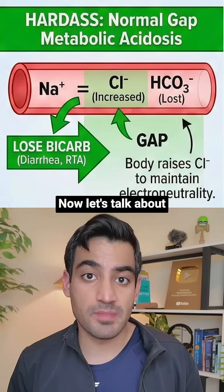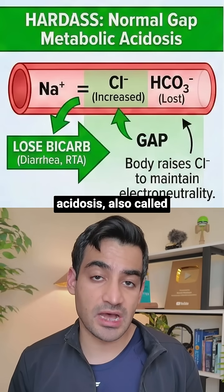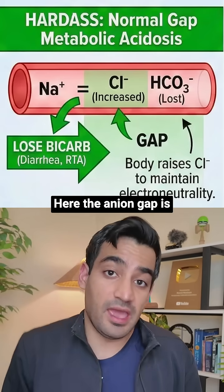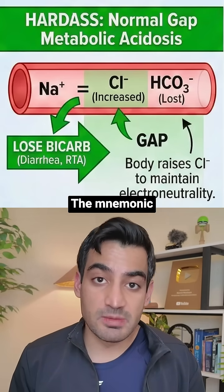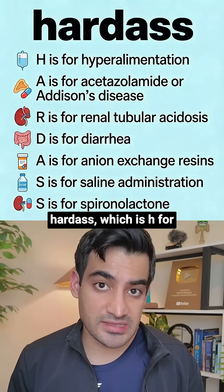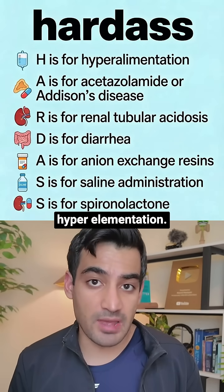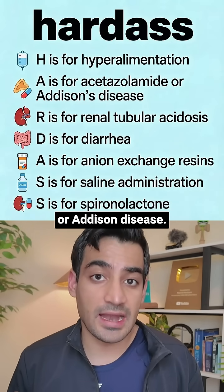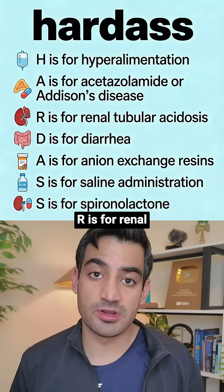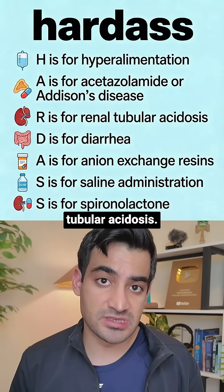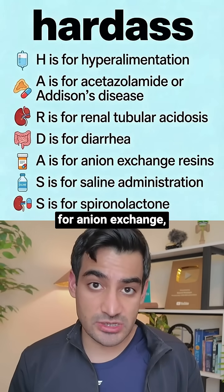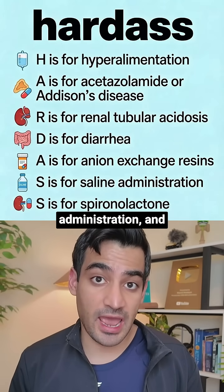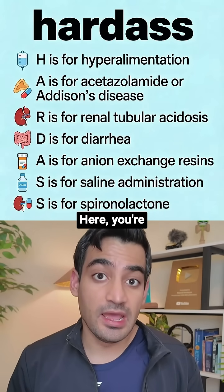Now let's talk about normal anion gap acidosis, also called hyperchloremic acidosis. Here, the anion gap is between 8 to 12. The mnemonic for this is HARDAS: H is for hyperalimentation, A is for acetazolamide or Addison disease, R is for renal tubular acidosis, D is for diarrhea, A is for anion exchange resins, S is for saline administration, and the other S is for spironolactone.